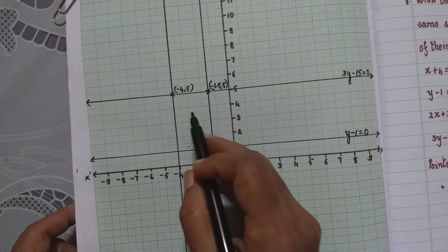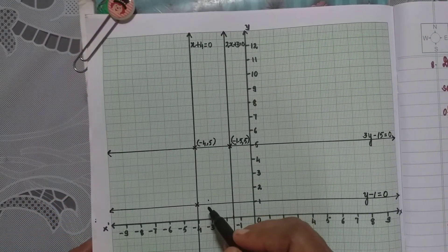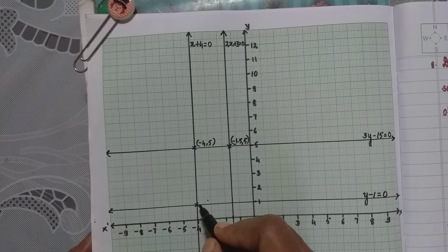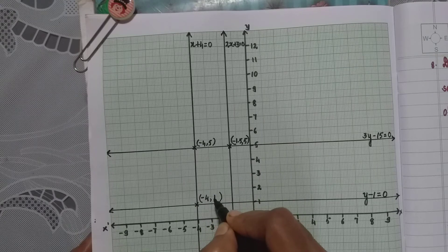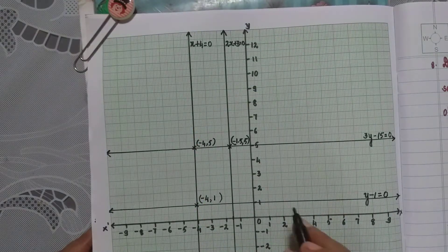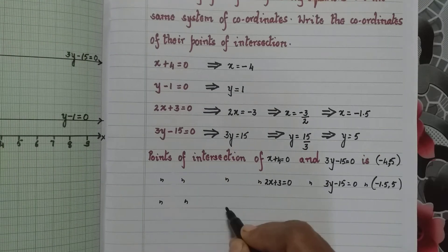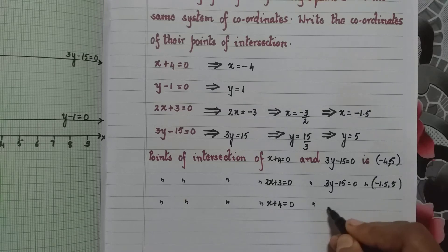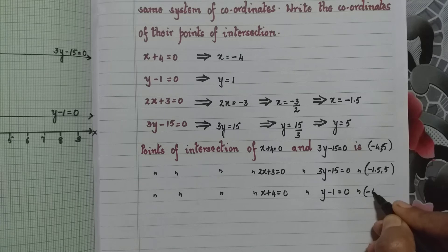So we have got 2 coordinates so far. There is one more point of intersection — the point of intersection of x plus 4 equal to 0 and y minus 1 equal to 0. The coordinates are minus 4 on the x-axis and 1 on the y-axis, giving minus 4 comma 1.